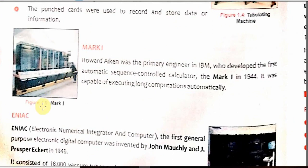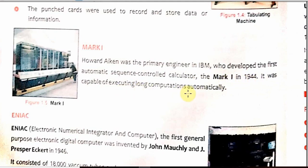The next machine was called Mark 1. You can see this is Mark 1 — it was also a big machine. It was invented by Howard Aiken, who was a primary engineer at IBM. IBM stands for International Business Machine and is based in America. Mark 1 was developed in 1944 and it was an automatic machine which ran on electricity.